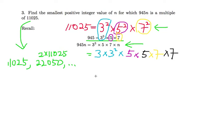So n, as you can see from here, is 5 and 7. 5 times 7 gives us 35. So that is the smallest positive integer that can make 945n into a multiple of 11,025.